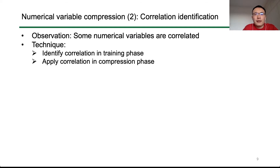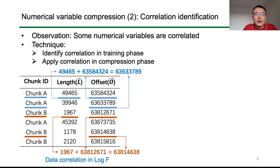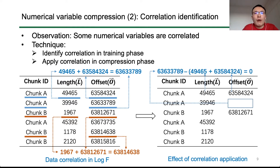Our second technique is based on the observation that some numerical variables are correlated. For example, in one log type, we have IO logs recording trunk ID, length, and offset for each write operation. If multiple writes to the same trunk are sequential, the offset of the current operation equals the offset plus IO length of the previous operation. We propose a method to identify several kinds of correlations during the training phase and apply them during compression. By subtracting values calculated from the correlation rule and storing only the residual, the results are smaller, mostly zeros, yielding a higher compression ratio.